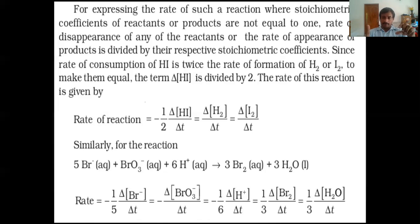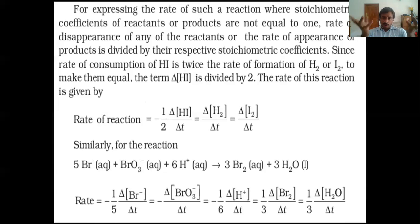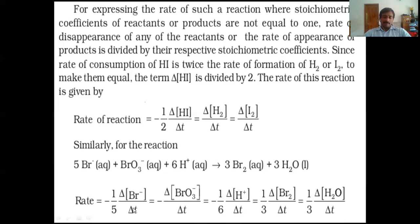The rate of appearance of I2 is delta[I2]/delta t, which also equals the rate of reaction. From the rate of disappearance of hydrogen iodide, you find the rate of reaction by dividing by two. Similarly, the rate of disappearance of Br⁻ is minus delta[Br⁻]/delta t, but the rate of reaction is minus 1/5 into delta[Br⁻]/delta t — you divide by 5 because 5 moles of Br⁻ are present.